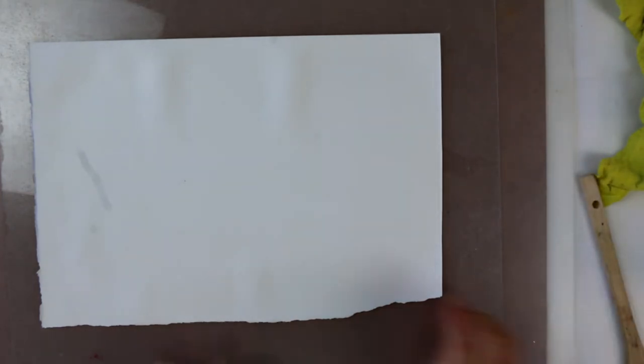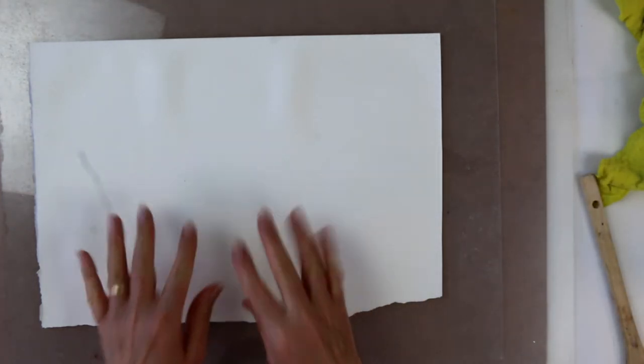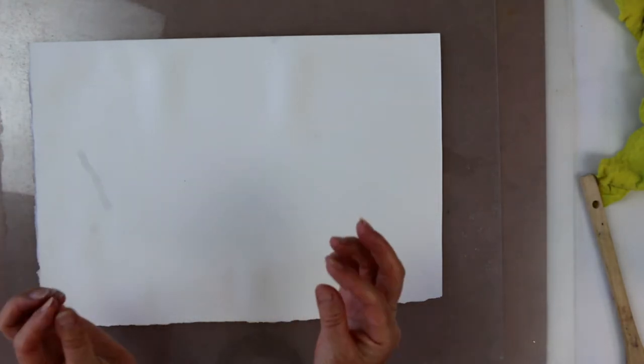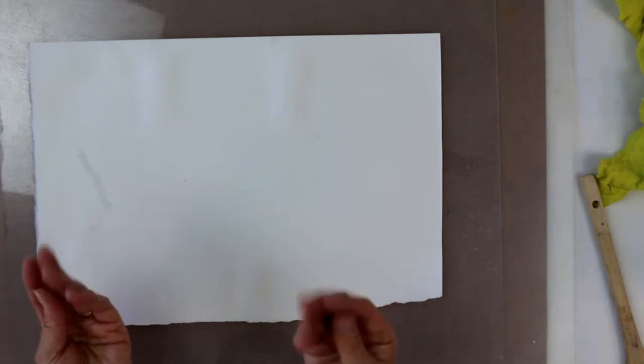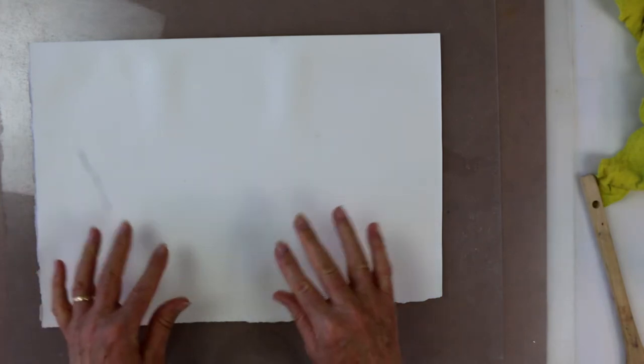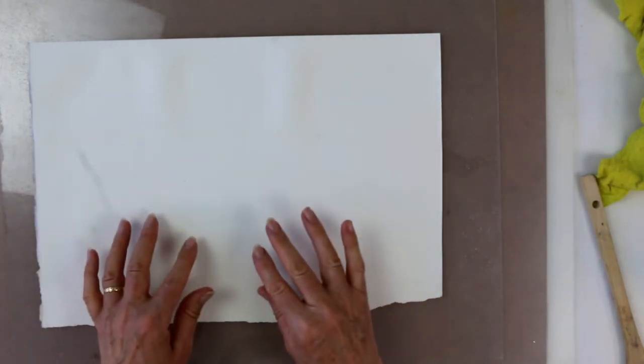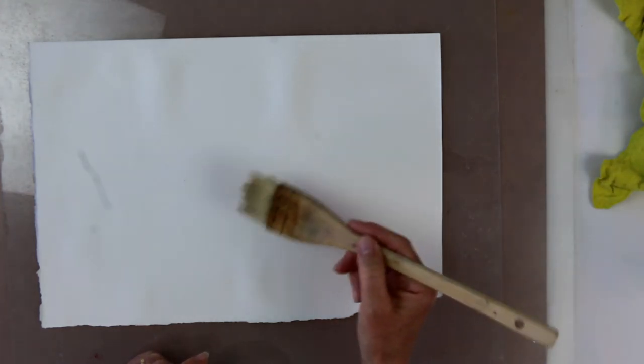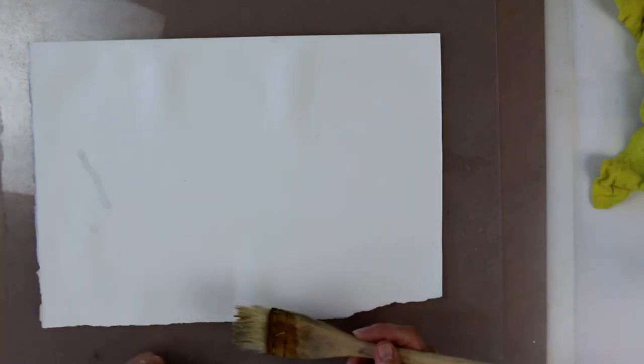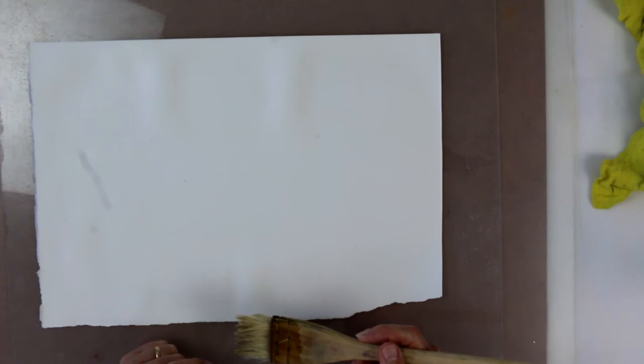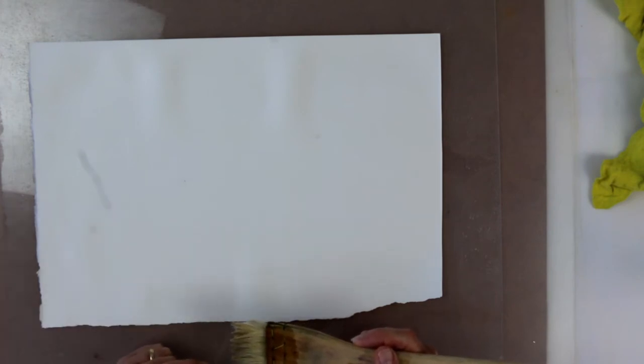By the way, never put your hands straight onto your watercolour paper because your hands have oil on them. You may not be able to see the oil but you can leave fingerprints behind and then when you come to paint, those fingerprints might leave a little white patch in your painting where the oil has got deposited onto the paper.